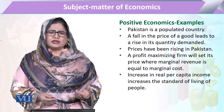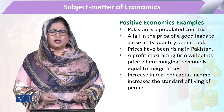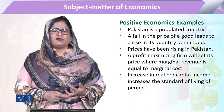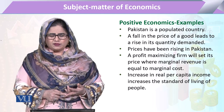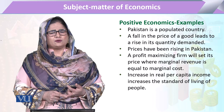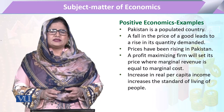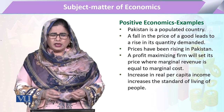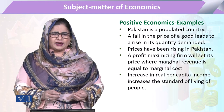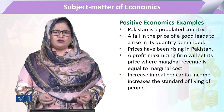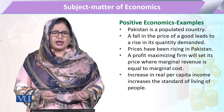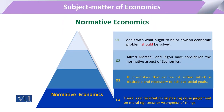Consider a profit-maximizing firm. It sets certain rules for purchasing factors of production, sets certain marginal revenue, and decides through marginal benefit. The basic decision rule through which decisions are made is based on facts, actual events, available data, and actual outcomes.